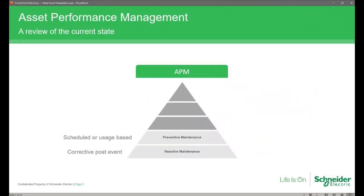The bottom two layers of the APM stack are the reactive and preventative maintenance levels. Reactive would see a corrective action carried out on an asset based on a critical event like a failure. A typical example is an alarm in a SCADA system indicating a failure, and a member of the maintenance workforce is dispatched to resolve the fault. The next level is preventative — routine-based maintenance based on time or usage statistics, such as run hours or number of starts, and when exceeded it triggers a maintenance work order request.